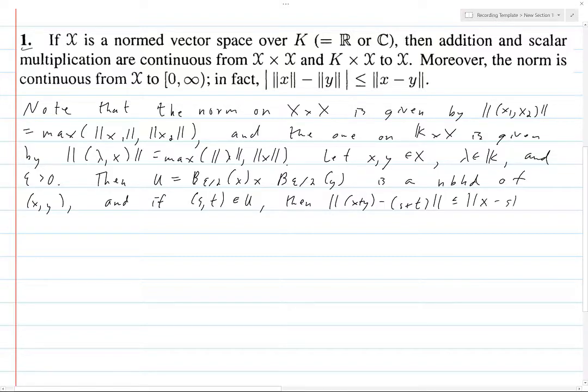So this is less than or equal to ||(x - s) + (y - t)||, that's less than epsilon, because each one is in the ball of epsilon over 2. Thus, plus is continuous.